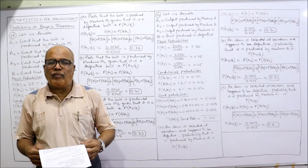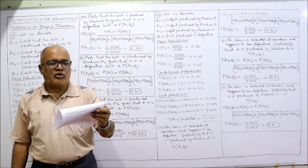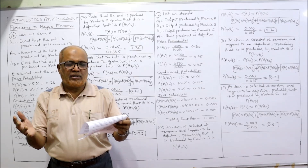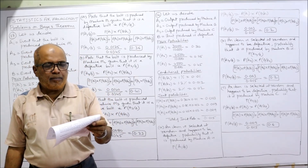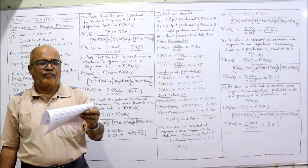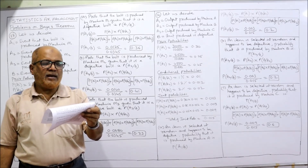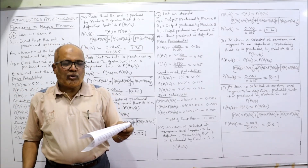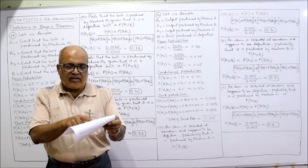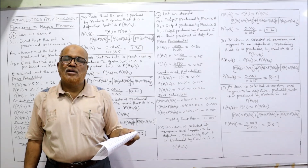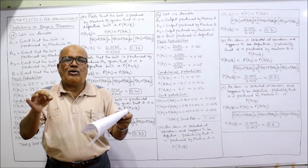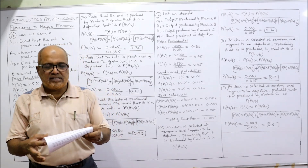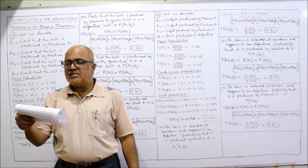Last and final problem — problem 14. A factory produces output using 3 different machines. The respective daily production figures are: machine A produces 3,000 units, machine B produces 2,500 units, and machine C produces 4,500 units. Total output: 3,000 + 2,500 + 4,500 = 10,000 units per day.